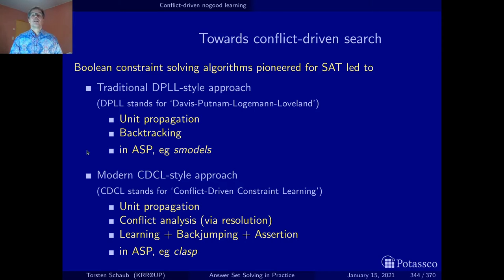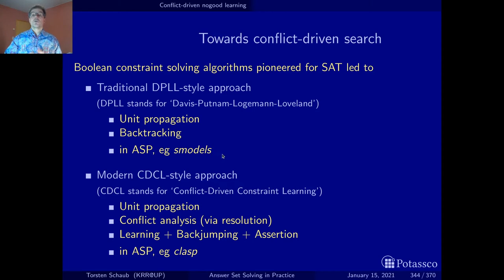In ASP, this approach was pursued by the very first ASP system, S-models, which was built at the Technical University of Helsinki, now called Aalto University.